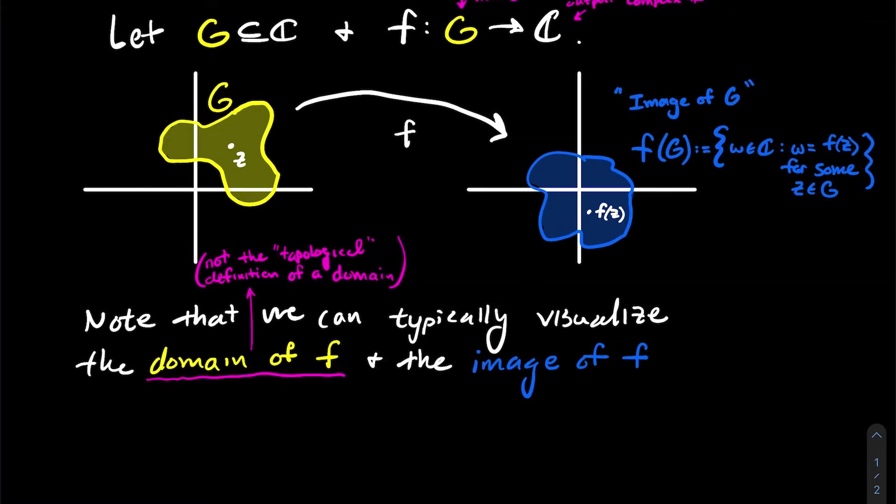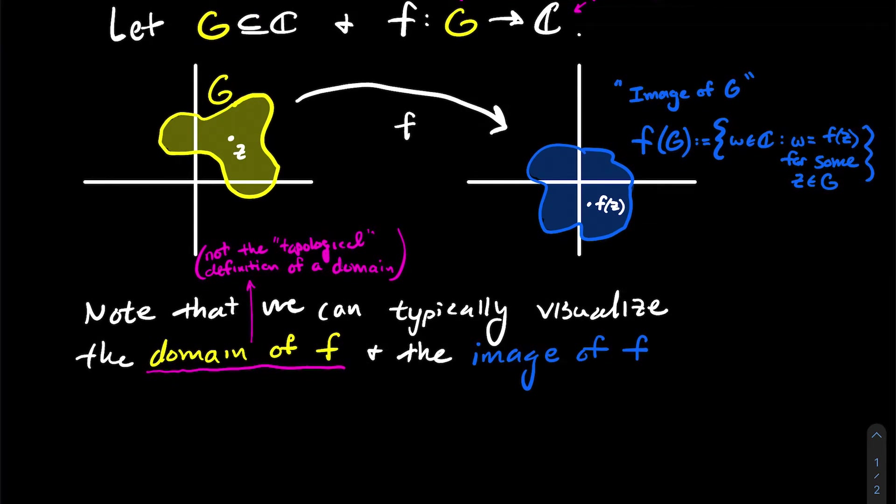And so good, I just wrote that down. So not necessarily the topological definition of domain, just set of all inputs like you're used to from college algebra calculus. And so we can typically visualize the domain and the image of a complex function because they're two-dimensional, just like I've drawn, just two two-dimensional blobs. And so f is just something that transforms one blob maybe into another blob.